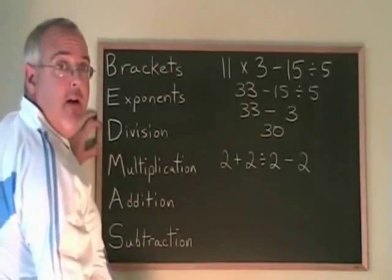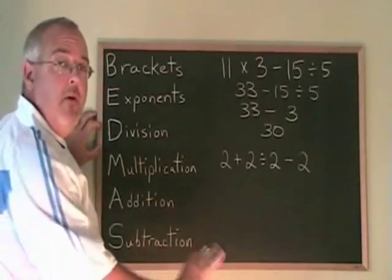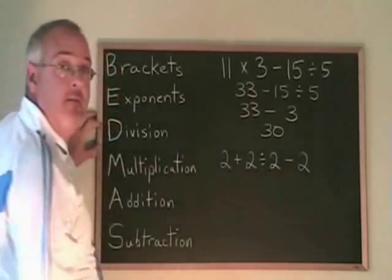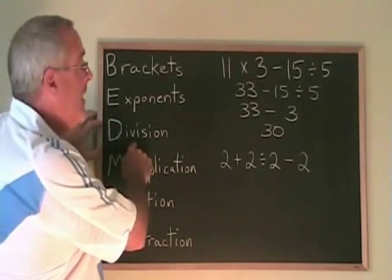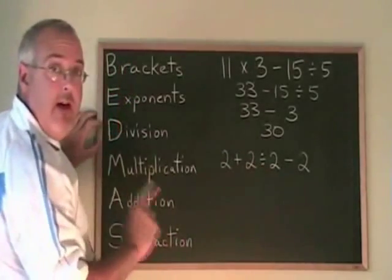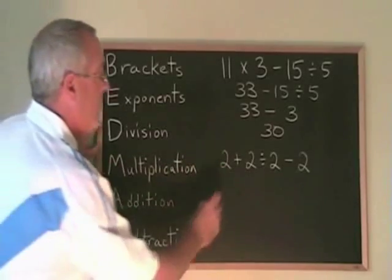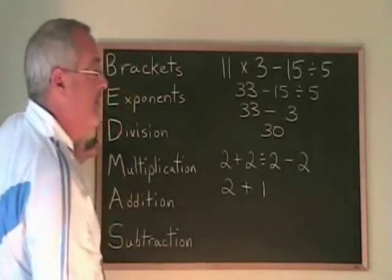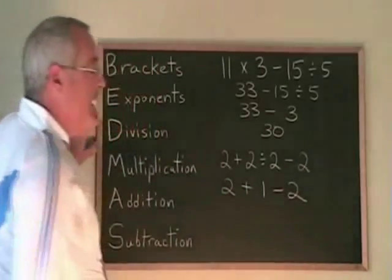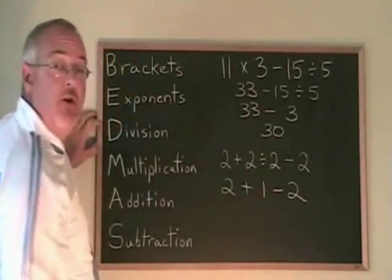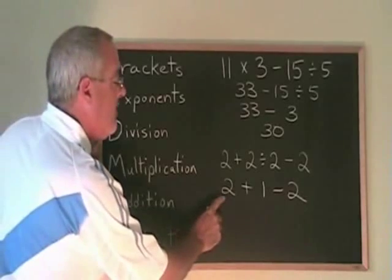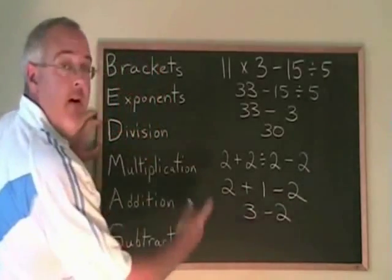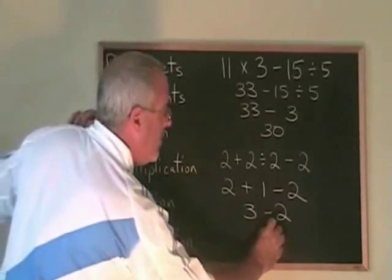In the second example, all the numbers are 2s, but we just apply the BEDMAS rule. We have addition, division, and subtraction. The division must be done first: 2 divided by 2 is 1. We copy down 2 plus 1 minus 2. Now we have addition and subtraction in a tie — reading left to right, 2 plus 1 is 3, giving us 3 minus 2. Finally, 3 minus 2 is 1. That's our answer.